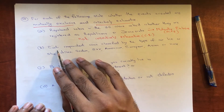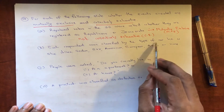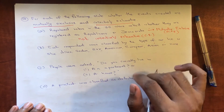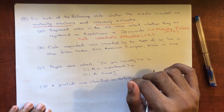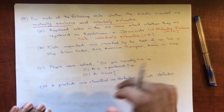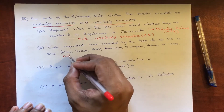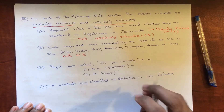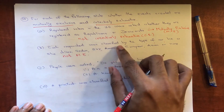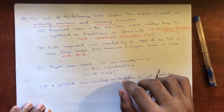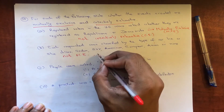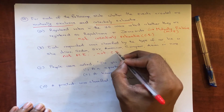For part B — classified by car type: sedan, SUV, American, European, Asian, or none — these are not mutually exclusive because an American can have a sedan, or a European can have an SUV, so events can occur simultaneously. It is also not collectively exhaustive because some people might have motorbikes, which are not classified here.